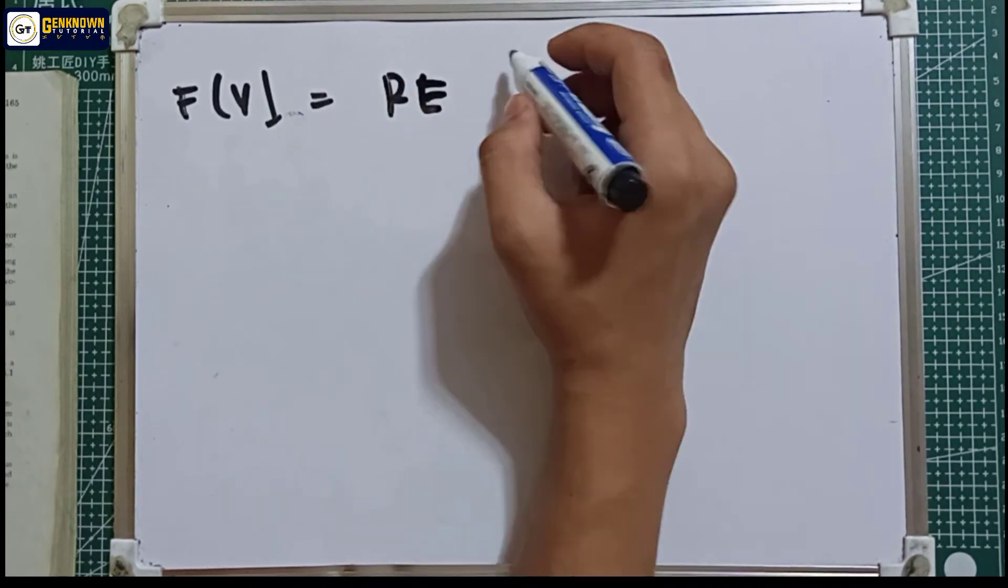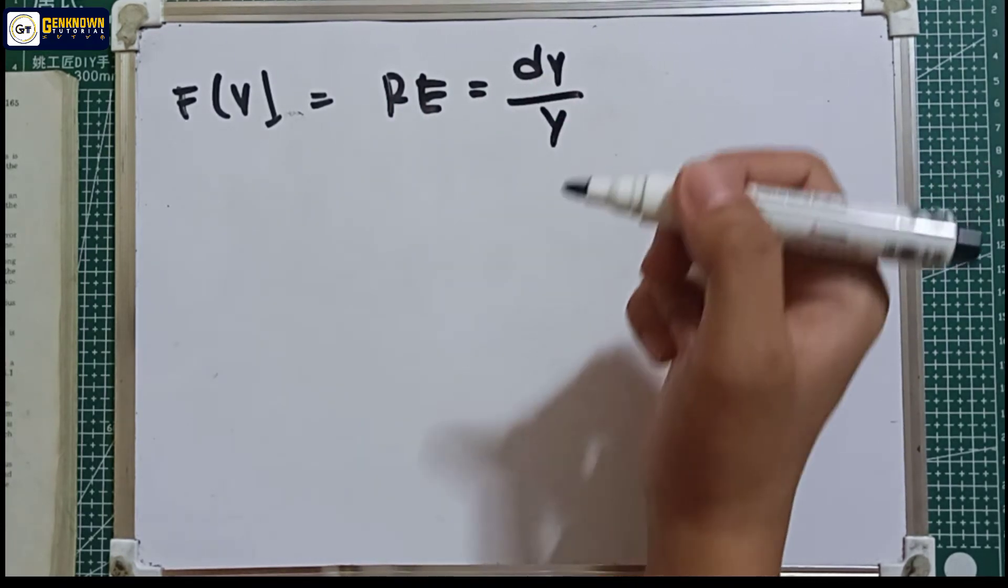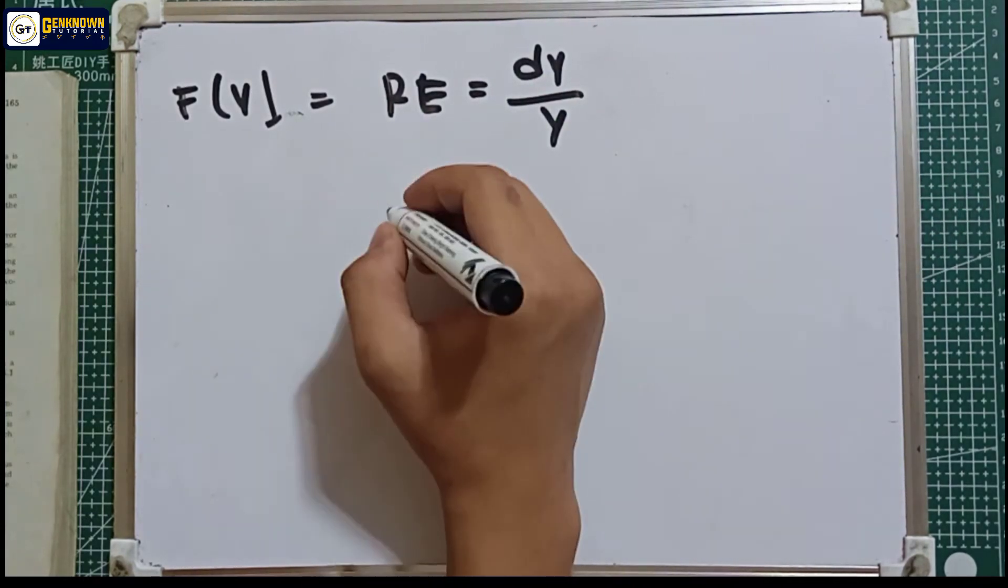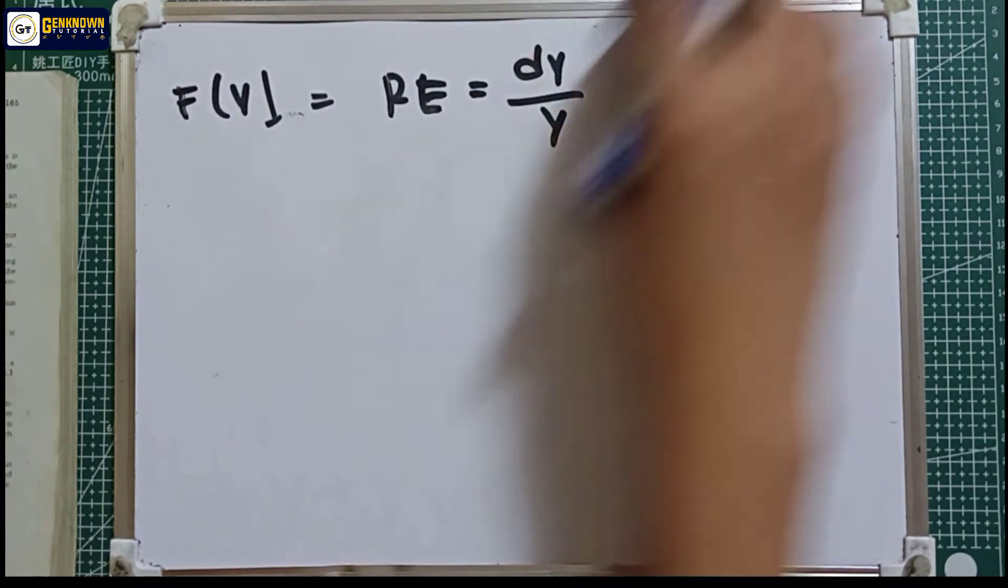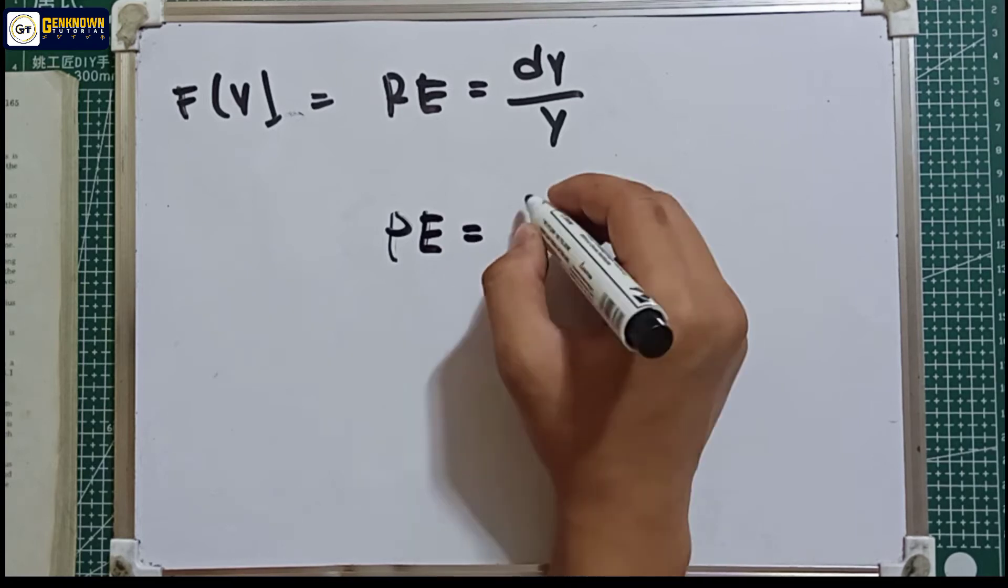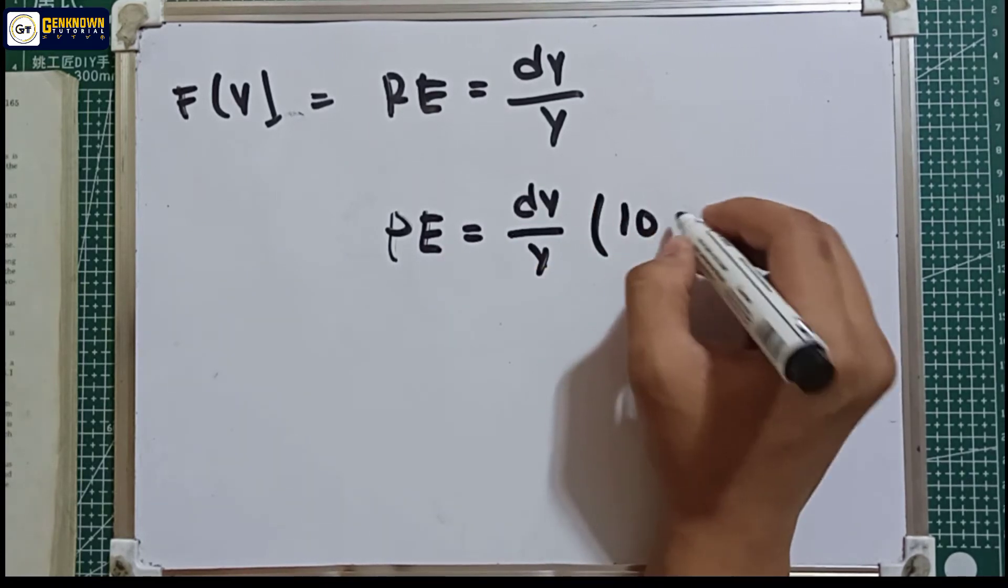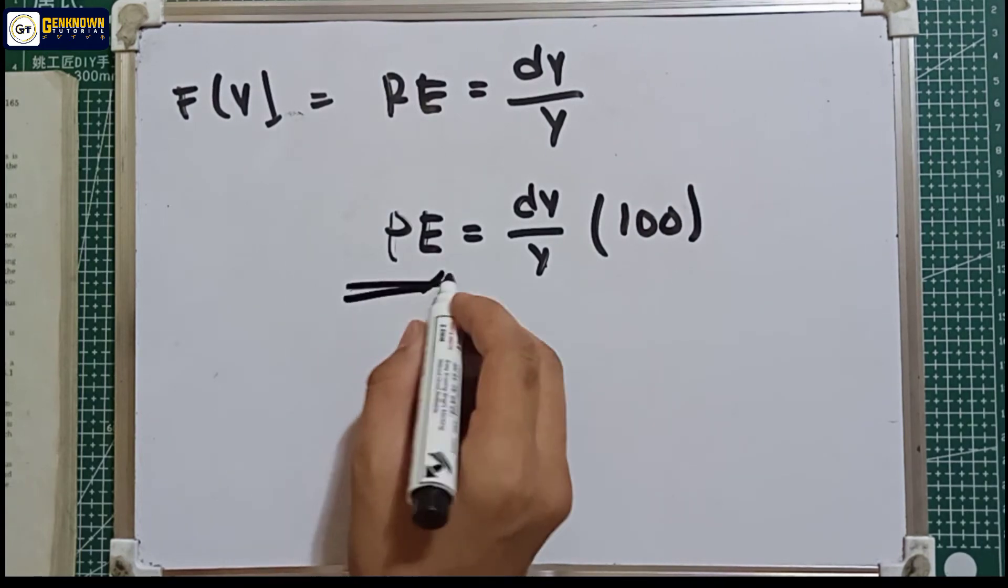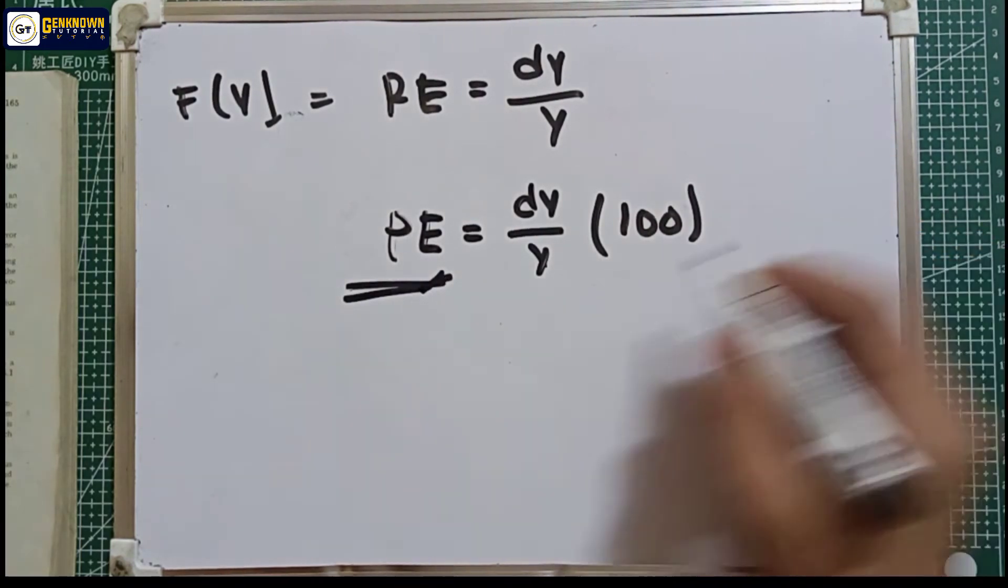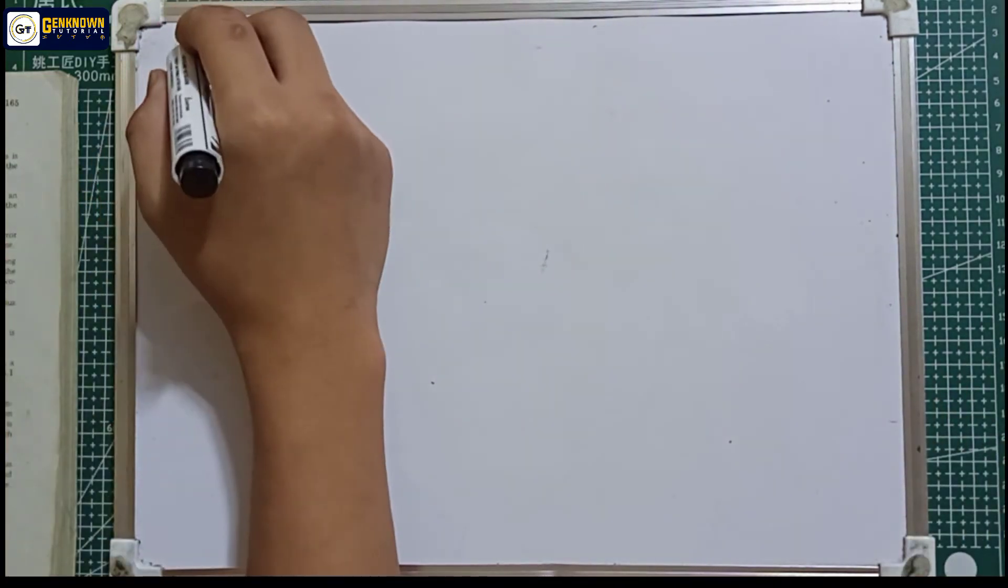is equal to the ratio of dy and y. And for the percentage error, PE is equal to dy over y multiplied by 100. Since we're talking about percentage, the answer should be in percent.